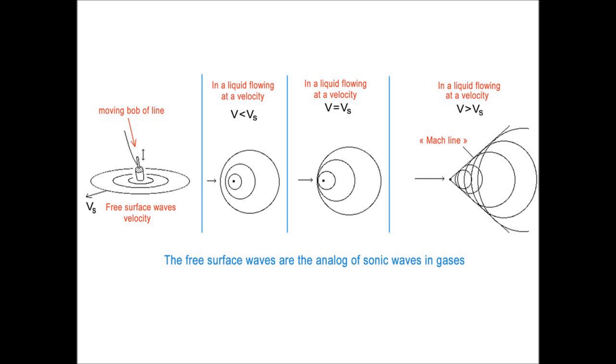Well, now, if you move the source of the oscillation, if you move the bob at a velocity slower than the velocity of the circular waves, nothing happens. But on the right, if you move the bob at a velocity higher than the velocity of the surface wave, then you produce waves which are the equivalent to the Mach line of the supersonic flows.